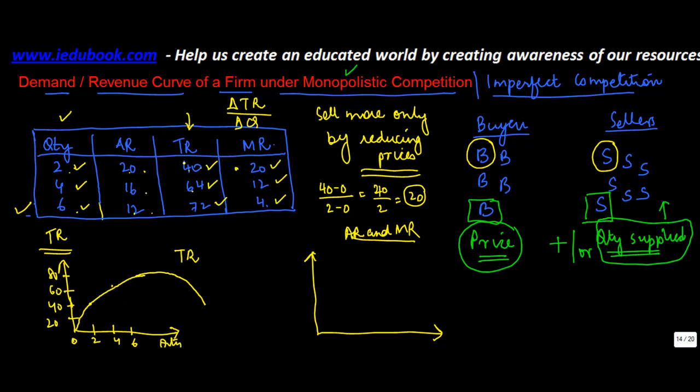We see the total revenue is increasing initially. There's a particular portion where it increases with the increase in quantity of goods sold. Then somewhere around here, it reaches its maximum point.